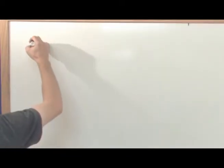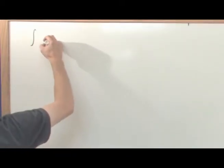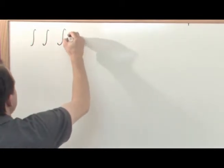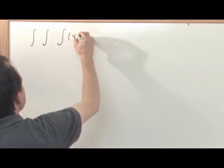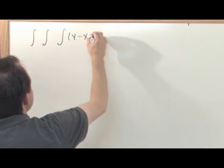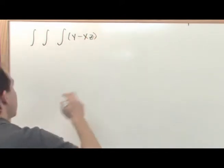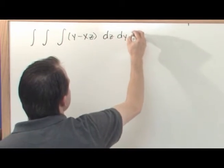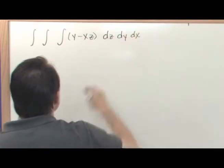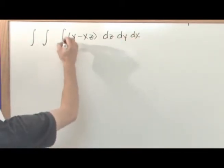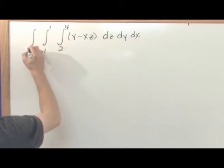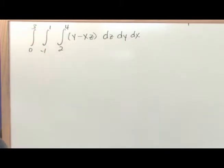Our first problem of the day is going to be a triple integral. The function is y minus x times z. We're going to integrate along dz first, then along dy, and then along dx. The limits of integration are from 2 to 4, negative 1 to 1, and 0 to 3.